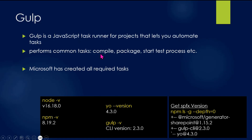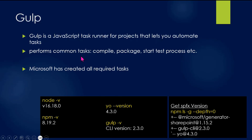Gulp performs common tasks like compiling scripts. The program runs as a script and compiles JavaScript. It is used to start processes and run the development server.